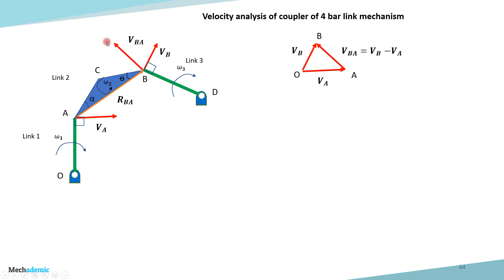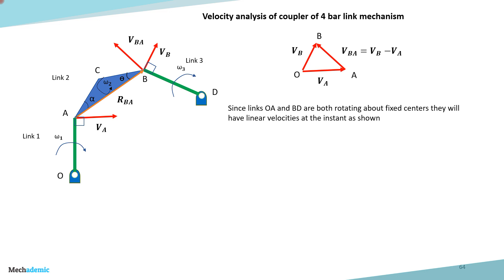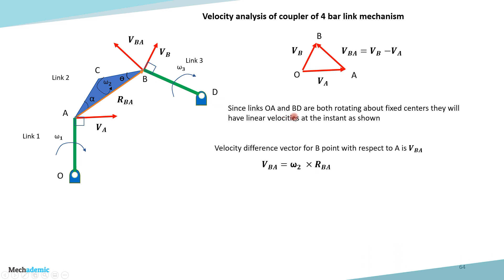The direction of VBA — although we know it is perpendicular — whether it faces upward or downward depends on connecting from the endpoint of VA to the endpoint of VB. In this case it goes upward. So we know the direction of VBA, and VBA equals VB minus VA from the velocity polygon.